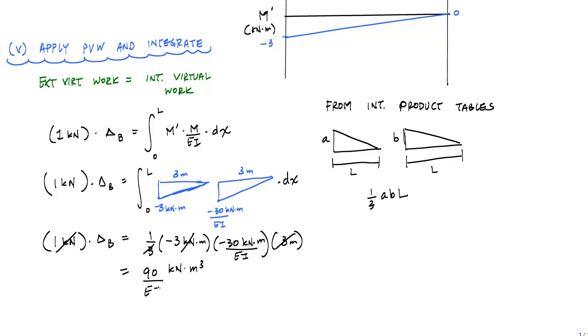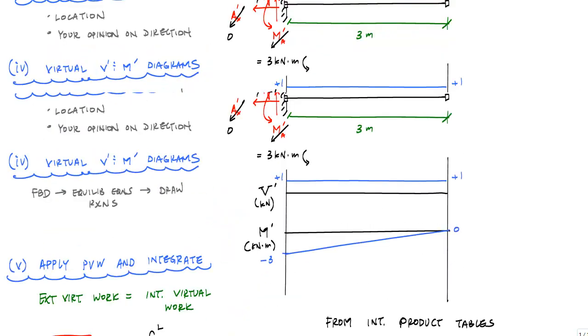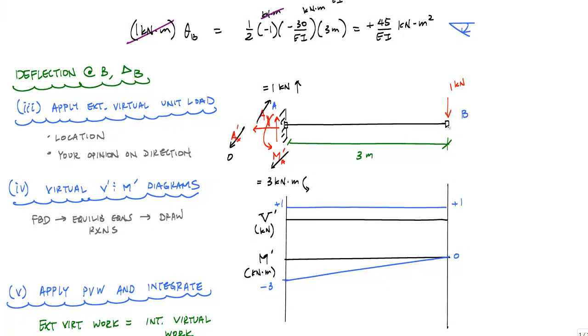As you might recall, EI had units of kilonewton meters squared. So if I were able to substitute values for E and I, I would end up with units of distance or meters in this case. So this would be delta B. Note this positive. This is a positive result. That positive just means that the direction I assumed for one kilonewton, this downwards, this point B moves down a distance delta B.